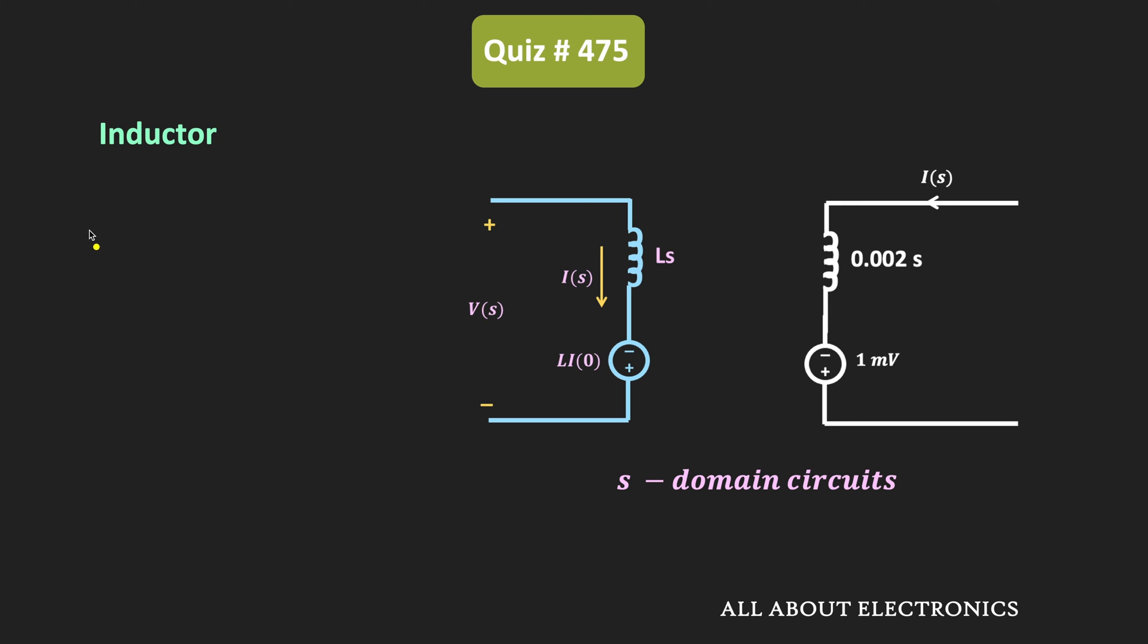So as you can see over here, this L is equal to 0.002H, or we can say that is equal to 2 mH. And here, this L times I0 is equal to 1 mV. So we can say that the initial current through the inductor, or this I0, is equal to this 1 mV divided by L, that is equal to 2 mH.